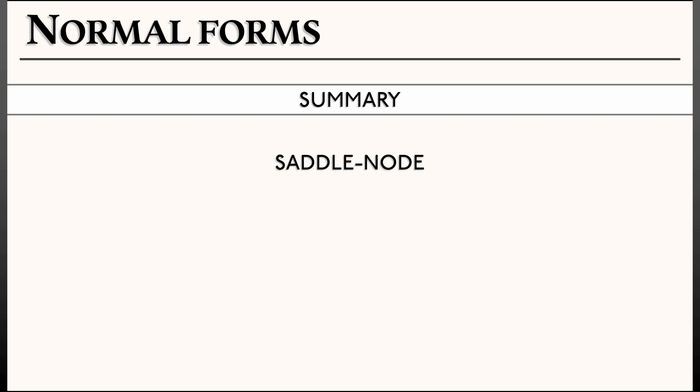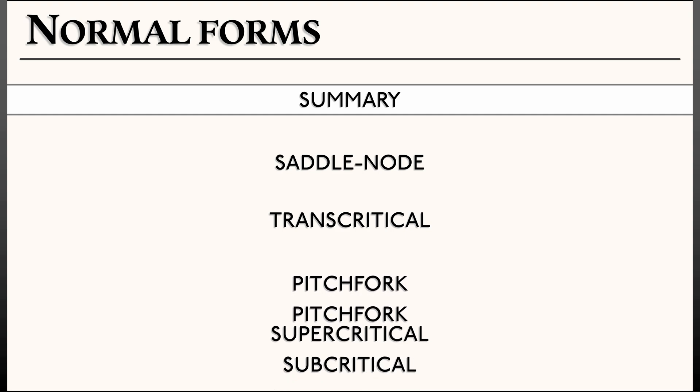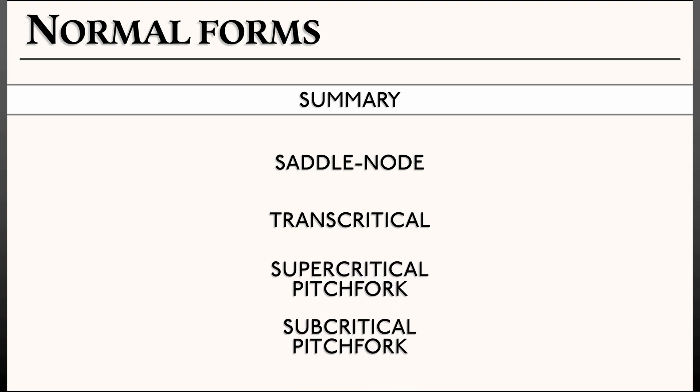Let's review. Let's summarize the normal forms for what we have seen. We have a saddle node bifurcation, and then we add a transcritical bifurcation, and then we add a pitchfork bifurcation, but those come in two variants, the supercritical and the subcritical pitchfork.